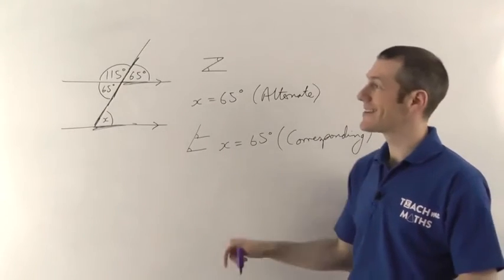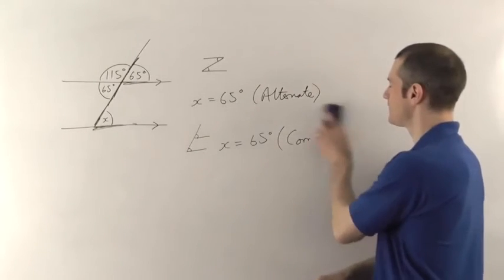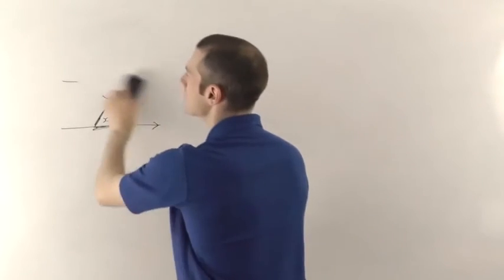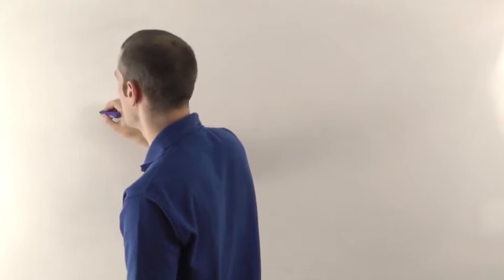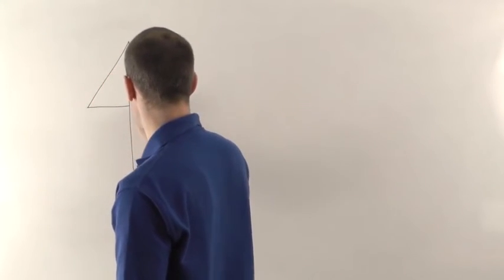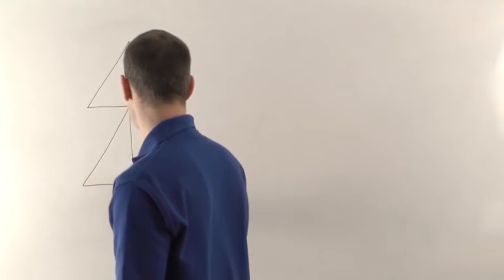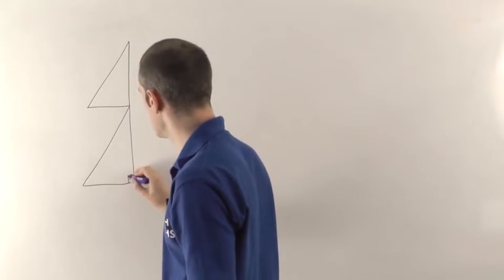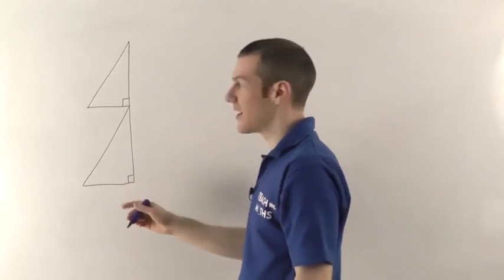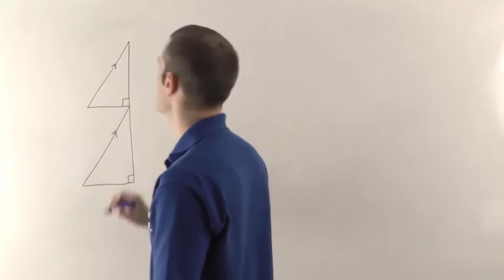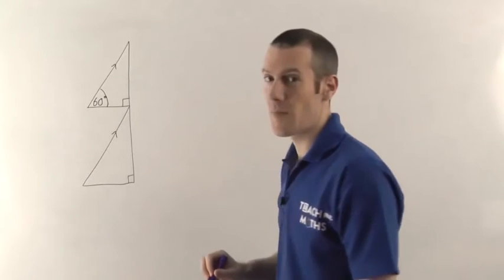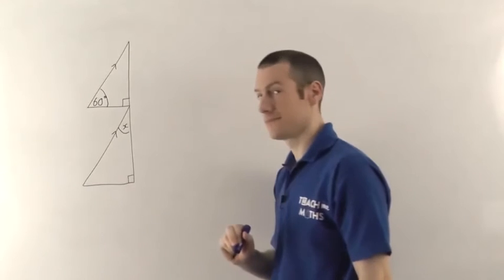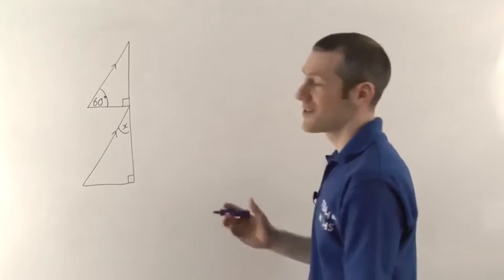That was a fairly simple problem with parallel lines, but these do get harder. Let's draw one with some triangles — they often love combining parallel line questions with triangles. We're going to have a straight line going down, a line that forms two right-angled triangles, and the two diagonal lines of the triangles are going to be parallel. I'll tell you this angle is 60 degrees, and we have to find X.